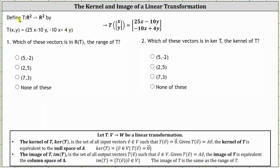We were given a transformation from R² to R² given by T of xy. I've also included T of xy using column matrices here on the right. Number one: which of these vectors is in R of T, the range of T? The range of T is the same as the image of T. And number two: which of these vectors is in the kernel of T?